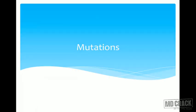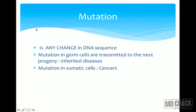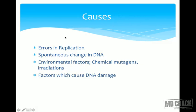Next, let us talk about mutations. A mutation is any change in the DNA sequence. Mutations in germ cells are transmitted to progeny and are responsible for inherited diseases; mutations in somatic cells are responsible for cancer. Causes include errors in replication, spontaneous changes in DNA, DNA damage, and environmental factors like chemical mutagens and irradiations.